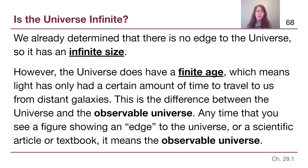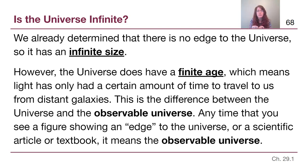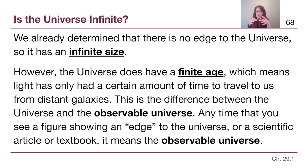Anytime you see a figure in a textbook showing an edge to the universe, what they're trying to convey is the observable universe — which we are at the center of, because we're with our own little flashlight in the forest. Imagine having a friend hundreds of yards away in that forest with their own flashlight — you might not even see each other. You will each have your own little observable portion based on where your perspective is.